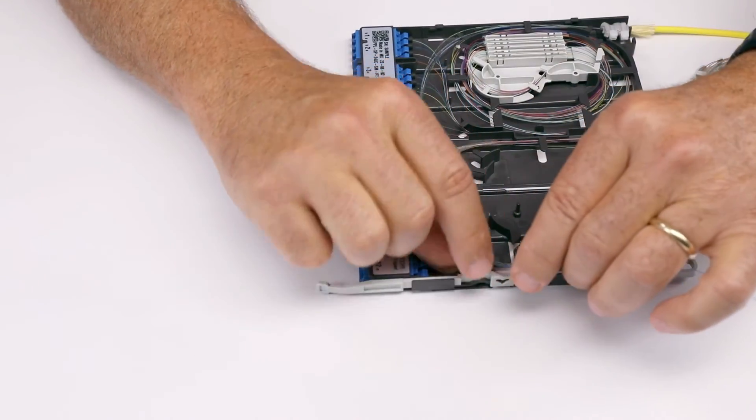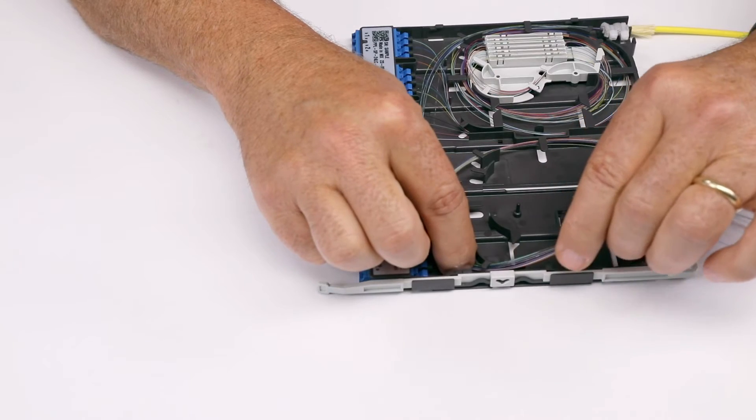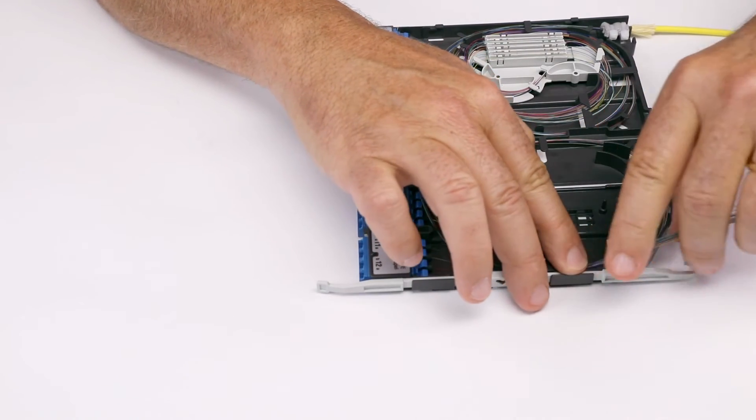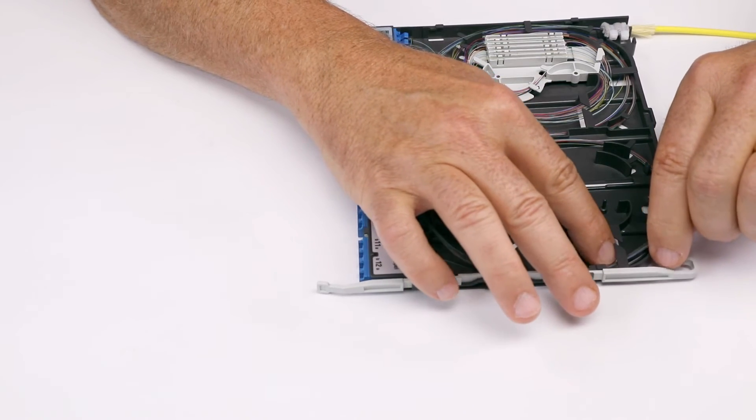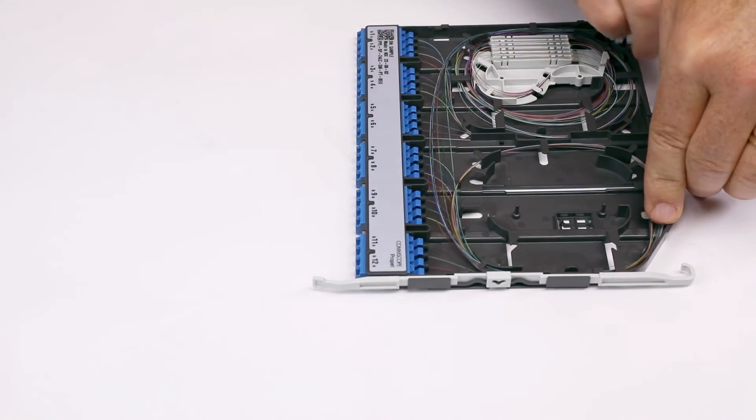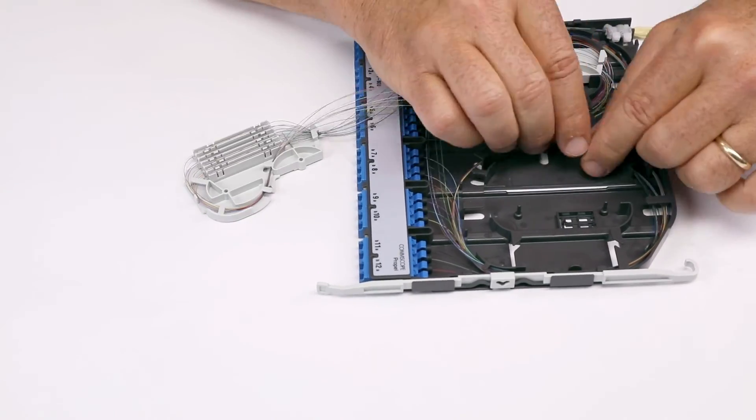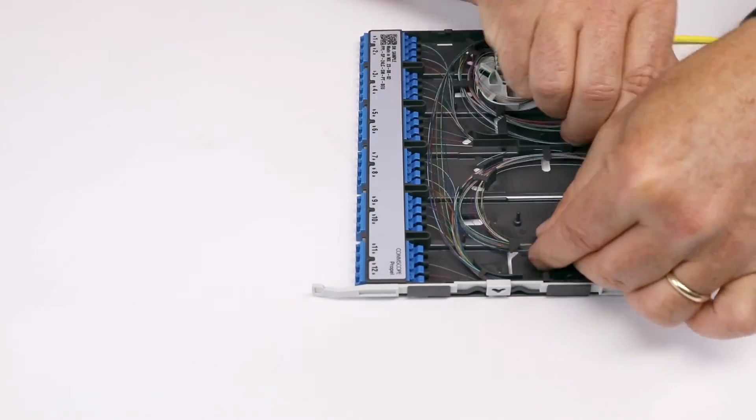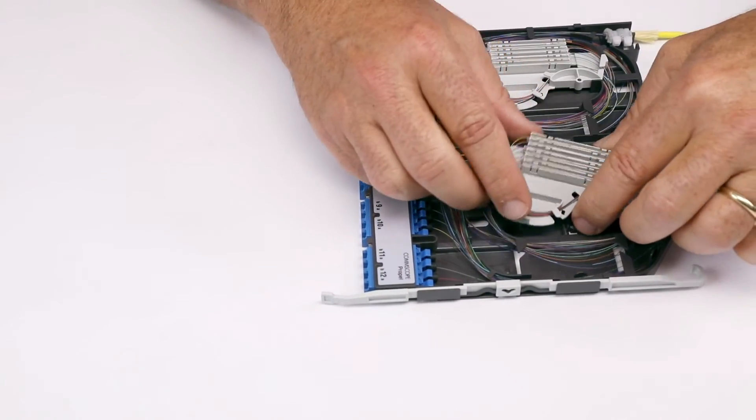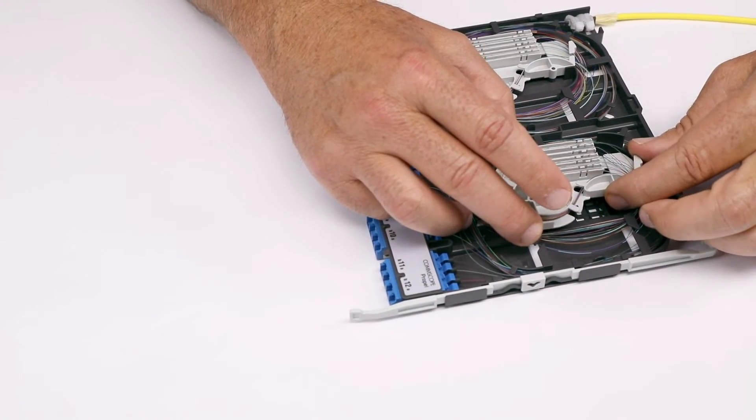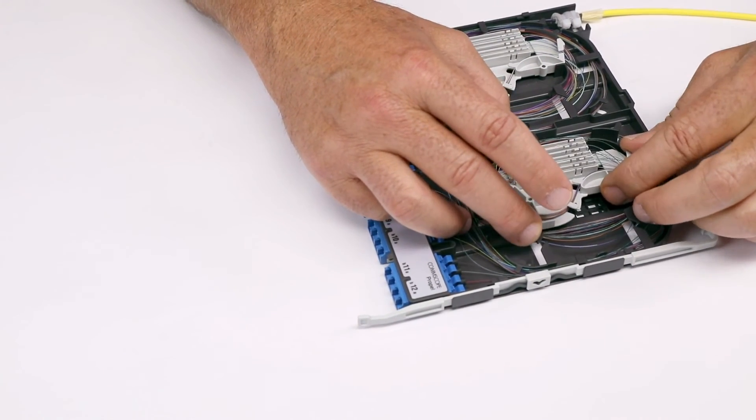Route pigtail fibers corresponding to fibers 13 through 24 counterclockwise starting along the outer half of the cassette and work inwards with each consecutive loop. Line up the pegs on the cassette base with the mounting holes on the spool to finish routing.